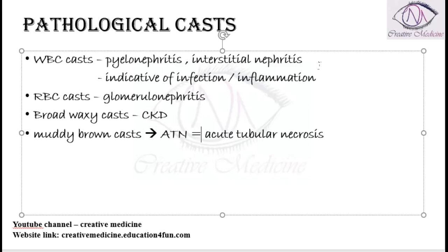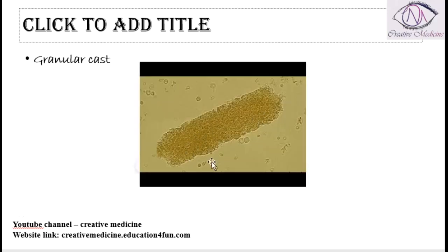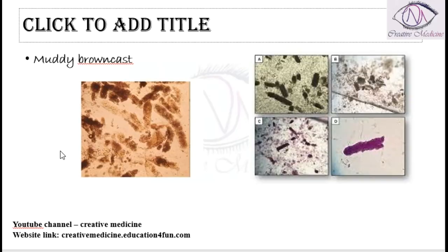Looking at the pictures: these are WBC casts, and these are granular casts. Muddy brown casts look brown in color and are almost like mud — this is what muddy brown casts look like.